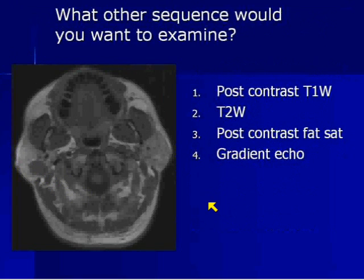So now you know you've got a well-defined solitary lesion in the parotid gland. What sequence would you want to examine next to help you decide what it is? Is it a post-contrast T1, T2-weighted sequence, post-contrast fat-sat T1, or gradient echo?